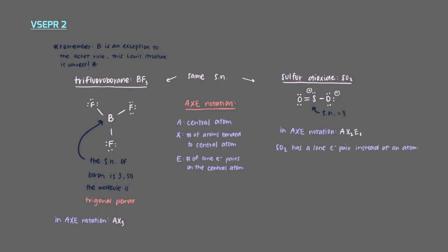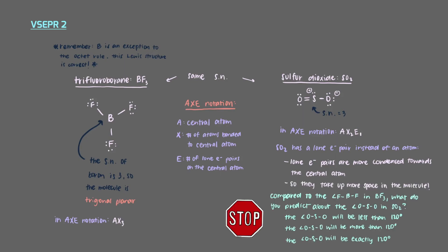SO2 has a lone electron pair instead of a third bonded atom like BF3 does. Compared to bonding electrons, lone electron pairs are more condensed towards the central atom. This means that they take up more space in the molecule. There is a 120 degree angle between each atom in BF3, but that's because there are no lone pairs on the boron and so all three groups take up the same amount of space.